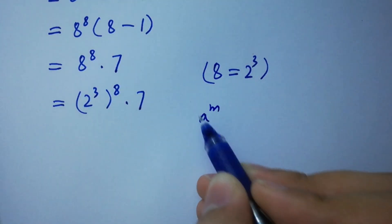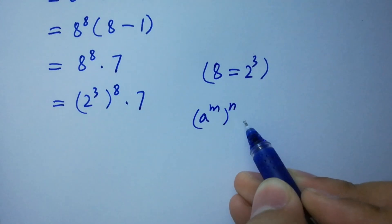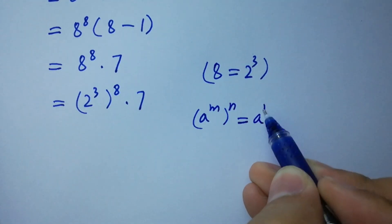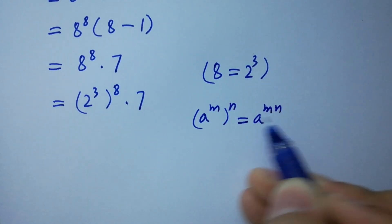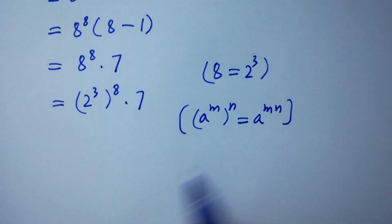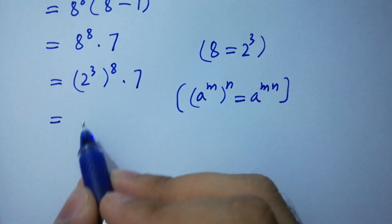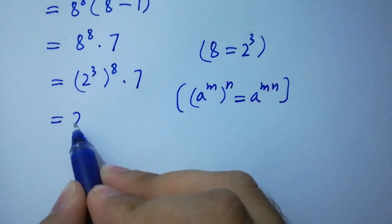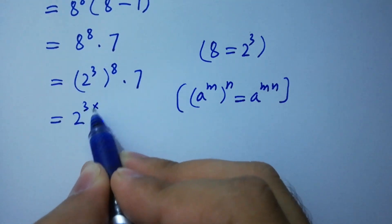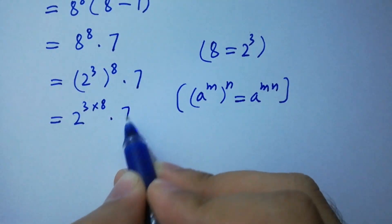Using the rule: a to the power m, to the whole power n, equals a to the power m times n. We have here 2 to the power 3 times 8, times 7.